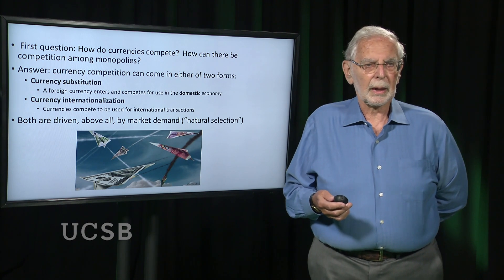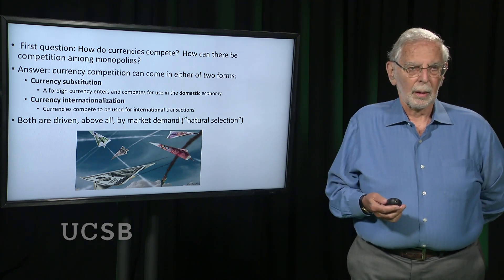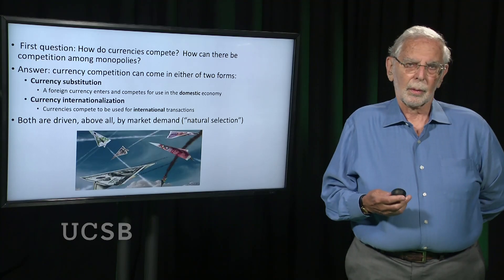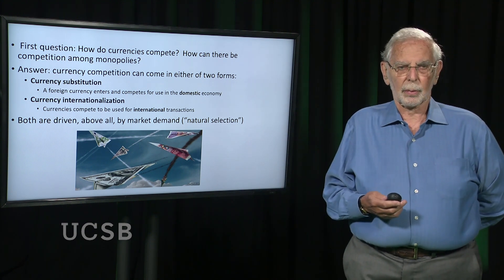Currency substitution is what happens when a country like Peru experiences a high rate of inflation. People become suspicious about the value of the national currency — the Peruvian peso — and so they begin to look for an alternative, to substitute a foreign currency for their own. In Peru, that would probably be the dollar, which is why we call this process of currency substitution 'dollarization.' Currency internationalization is different: it's the process by which certain national currencies come to be used for international purposes.